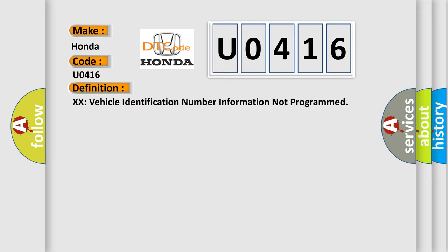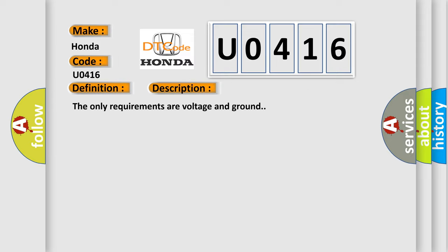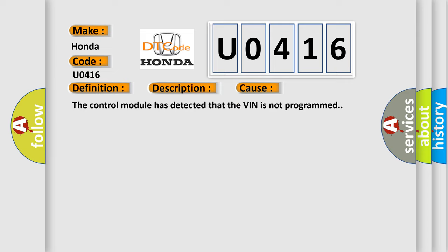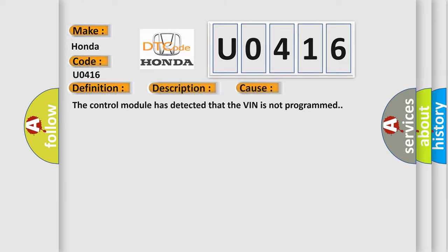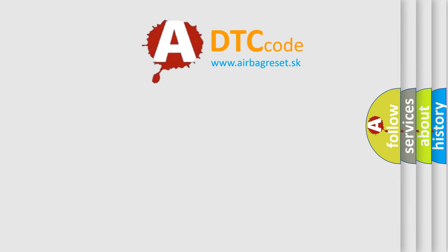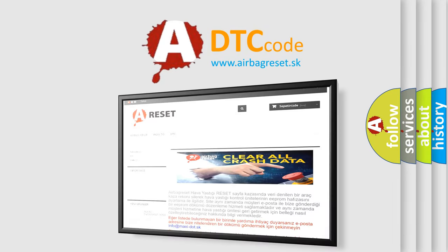The basic definition is: VIN (vehicle identification number) information not programmed. The only requirements are voltage and ground. This diagnostic error occurs most often when the control module has detected that the VIN is not programmed. The Airbag Reset website aims to provide information in 52 languages. Thank you for your support.